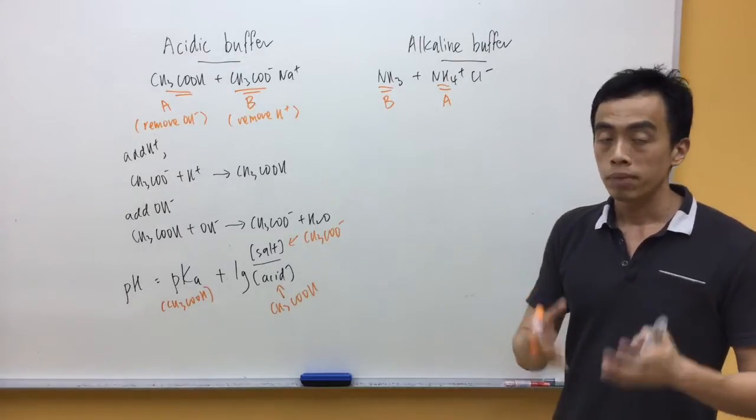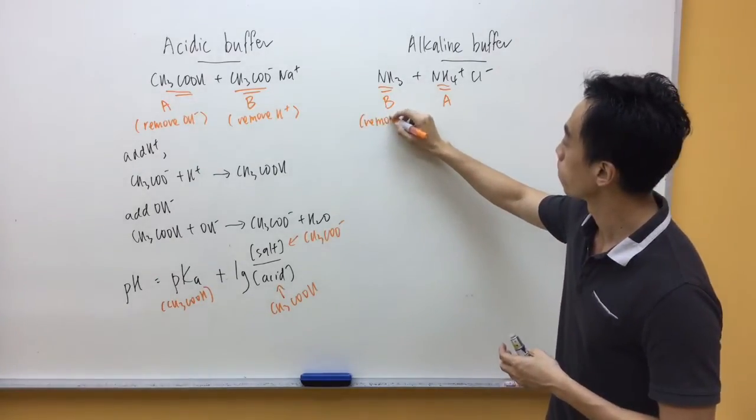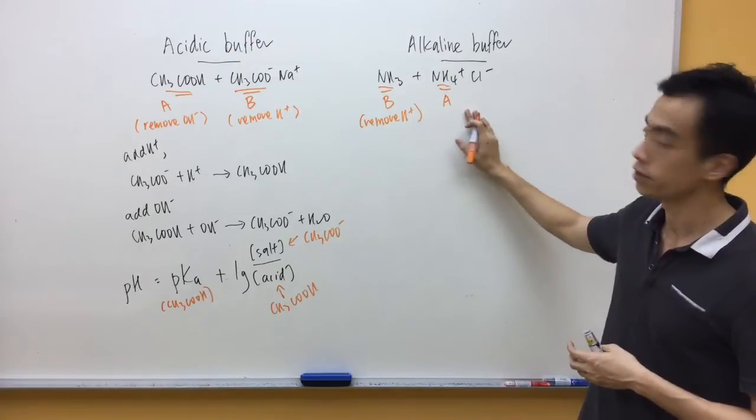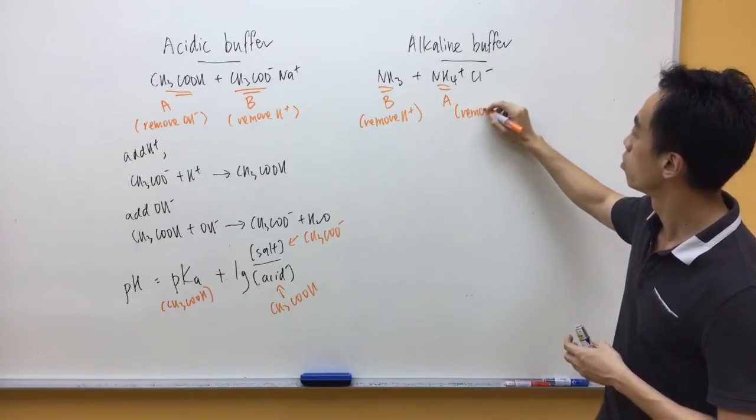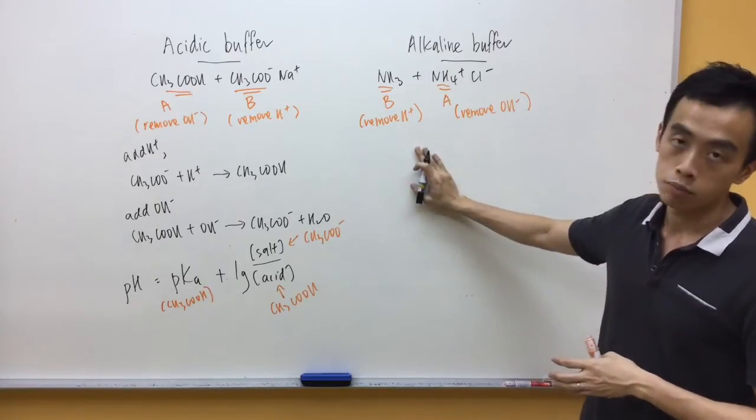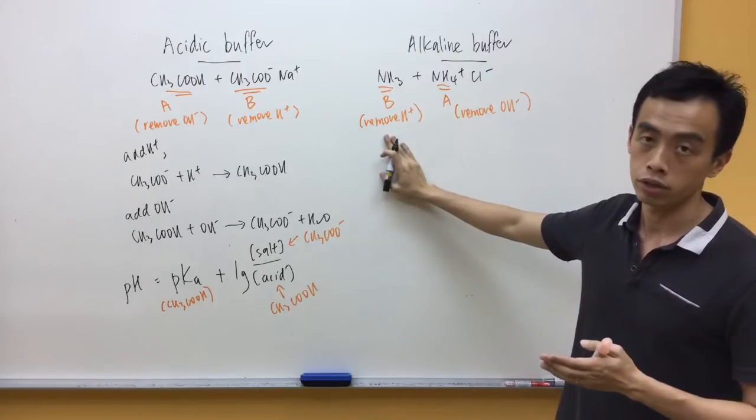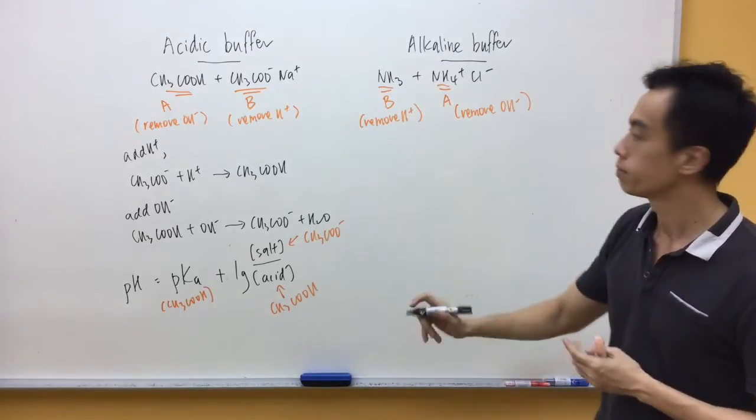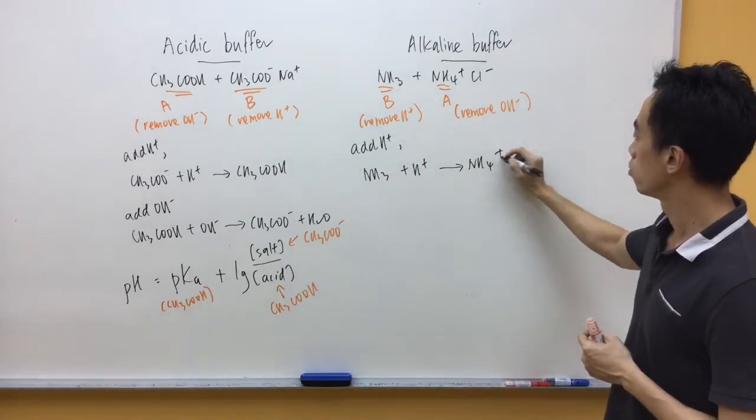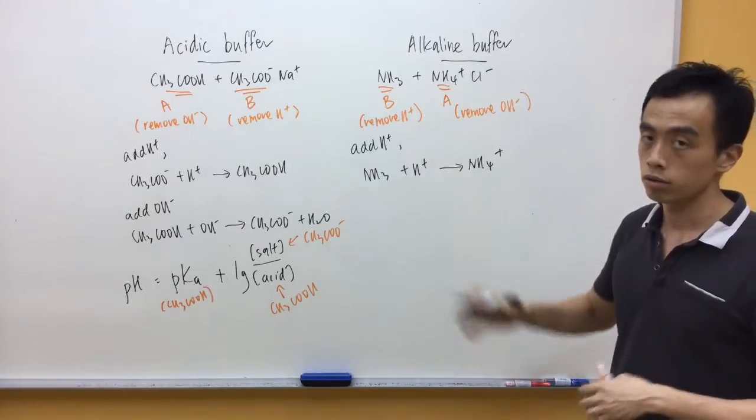So my base is responsible for removing H+. My acid will remove OH-. So what happens when I add H+ to this alkaline buffer? It will be removed by the base. So we just need to write down acid base reaction between H+ and ammonia. So you can see that the H+ is removed. So therefore pH is maintained.